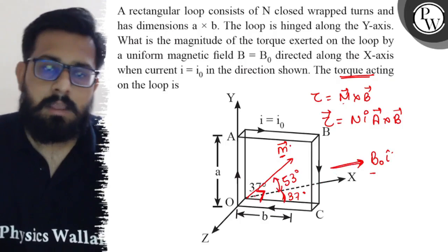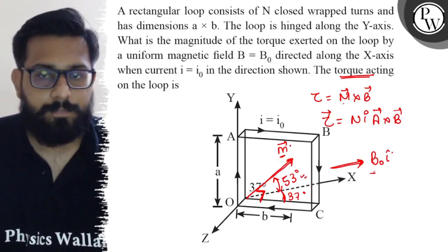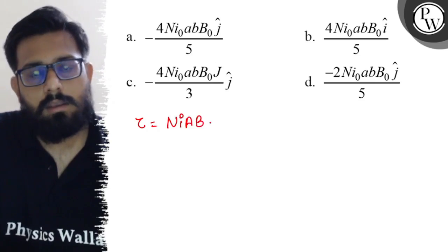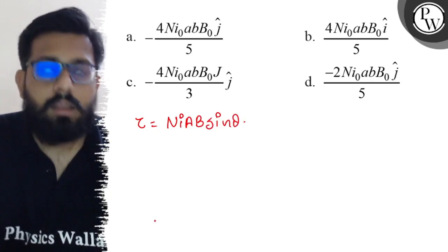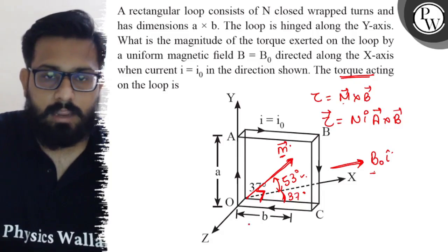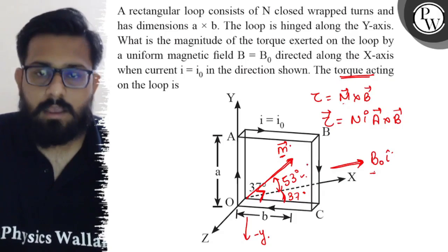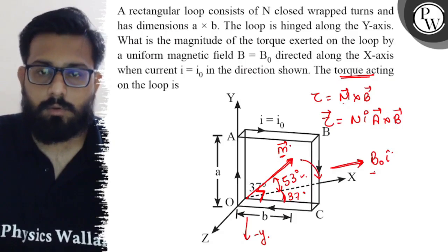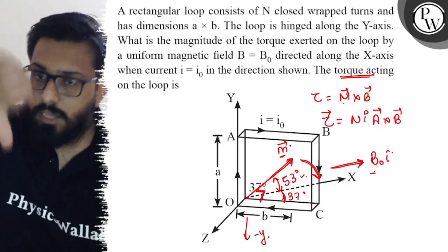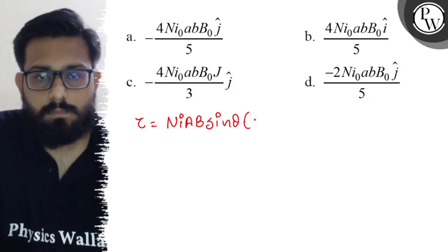The magnetic field is in this direction. The magnetic moment is along the negative z-axis, and the angle between the magnetic field induction and the magnetic moment is 53 degrees. So tau can be written as n·i·a·b·sinθ. Now for the direction: when you do m cross B, you get the direction of the torque in the minus y-direction. If you put your fingers in the direction of the magnetic moment and curl toward B, you find the torque is along the negative y-axis, so minus j-cap.